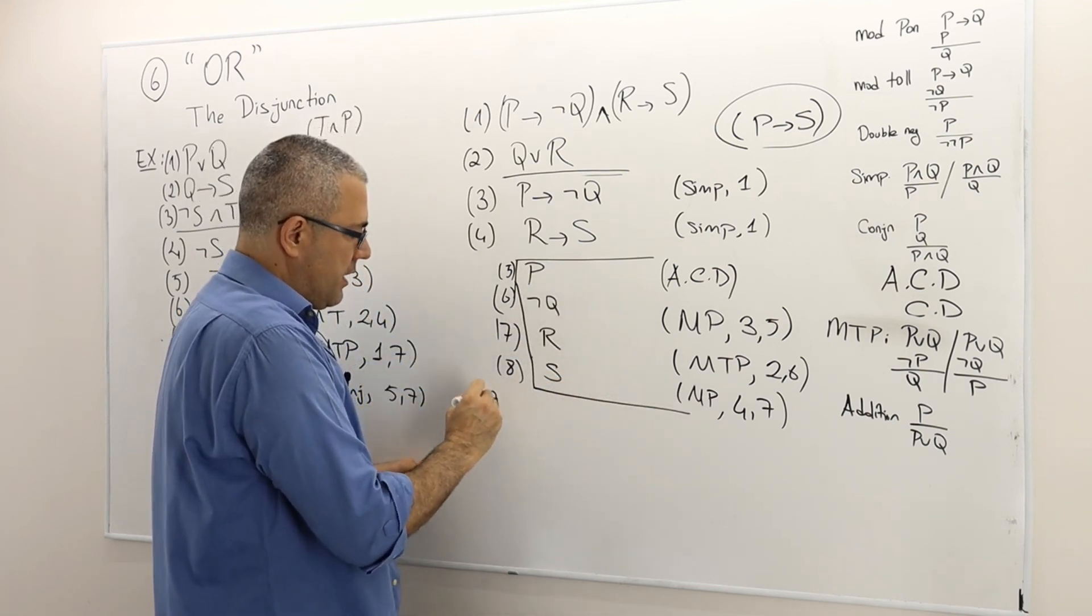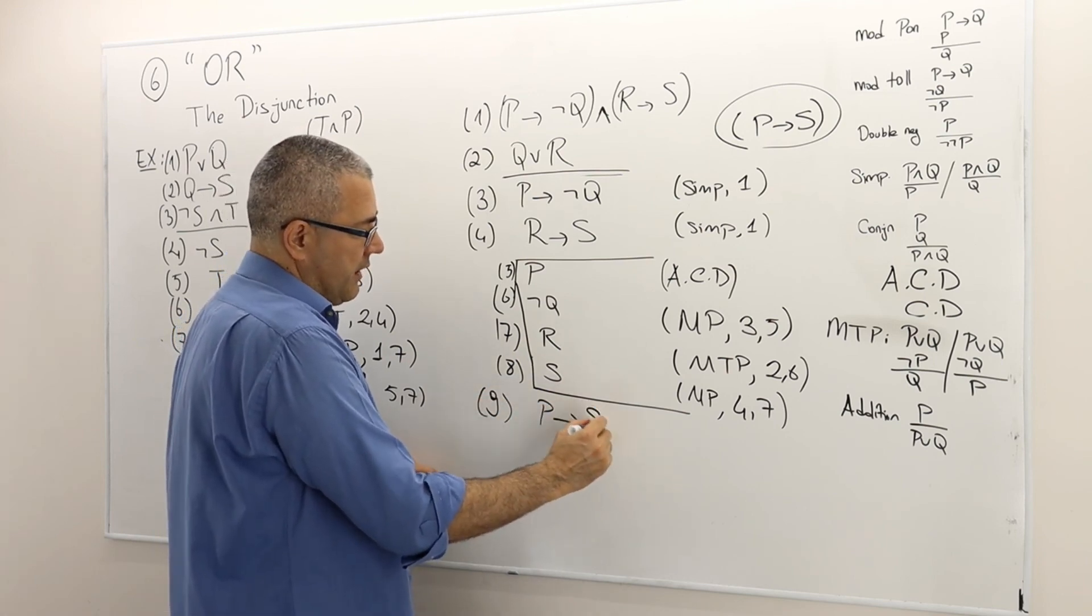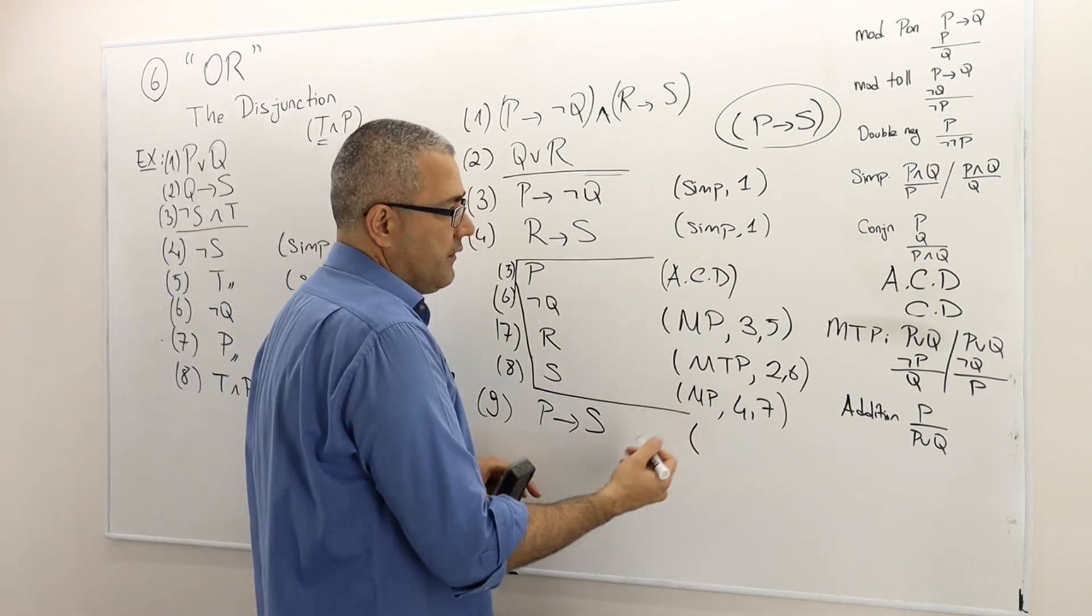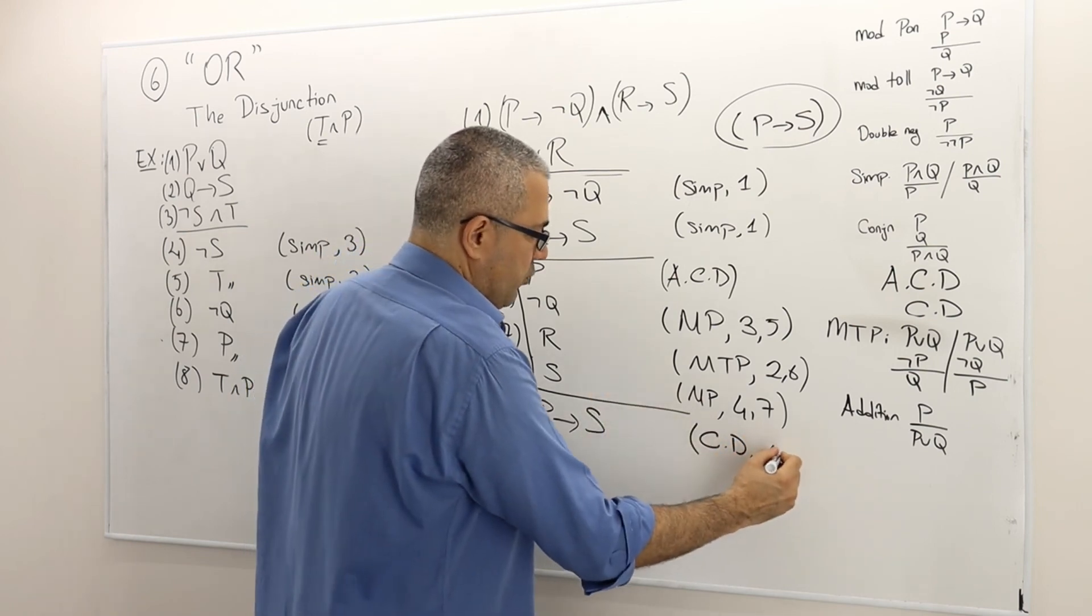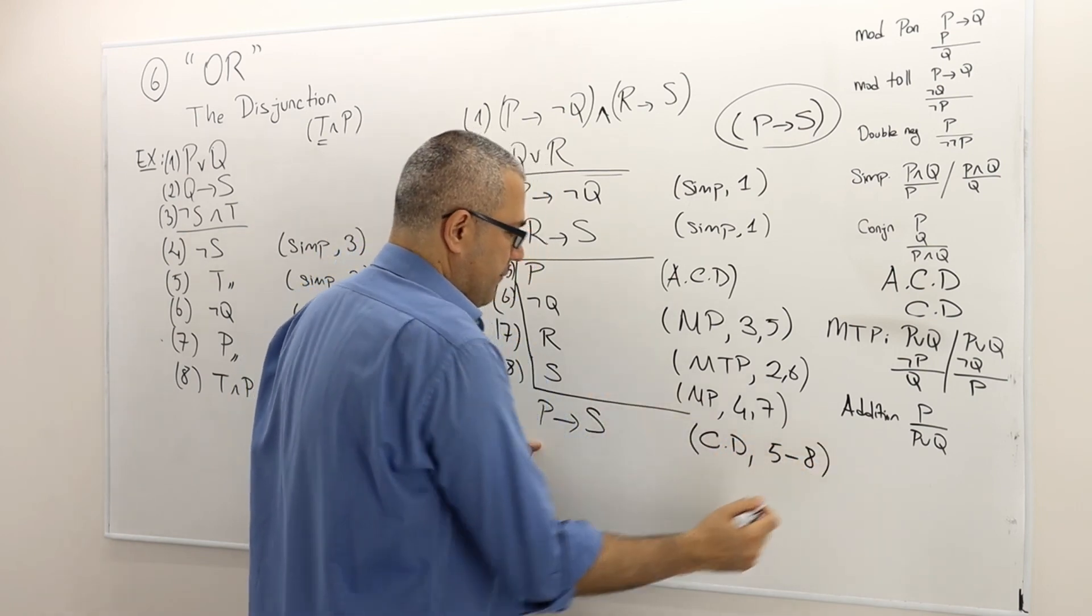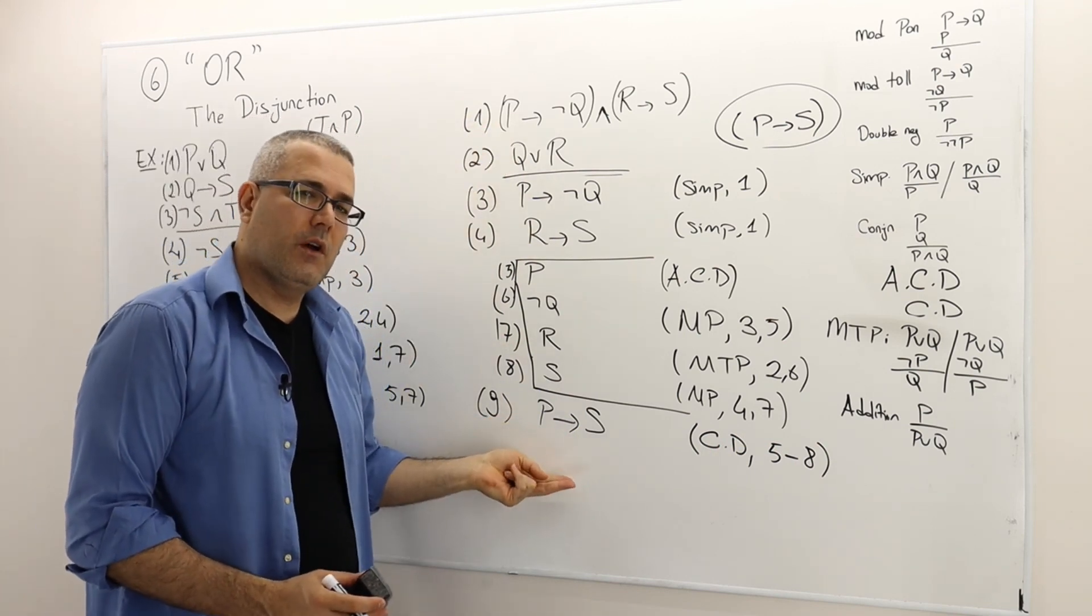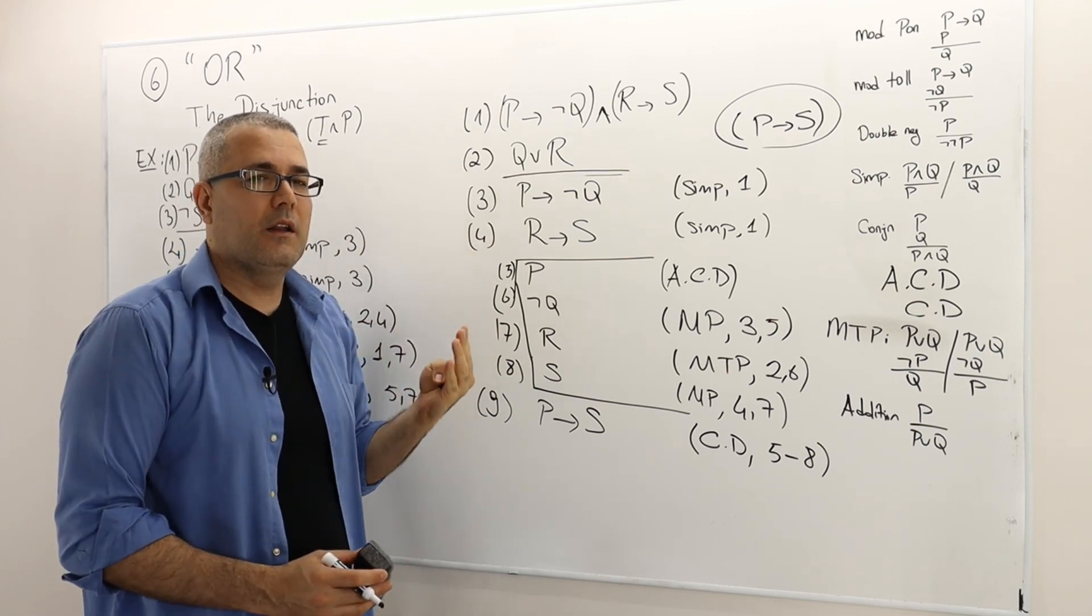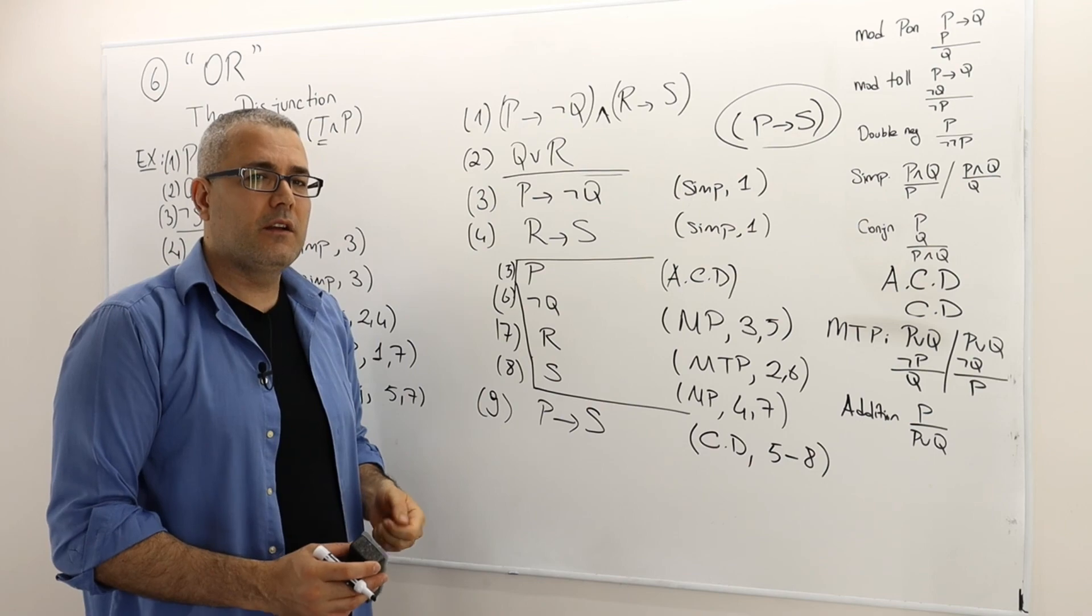So therefore, line nine, P implies S is true. And that was the conclusion. So what is this? This is conditional derivation thanks to the arguments between five to eight. So these were the premises. This is the conclusion. So I proved that the initial argument that I have is actually a valid argument.